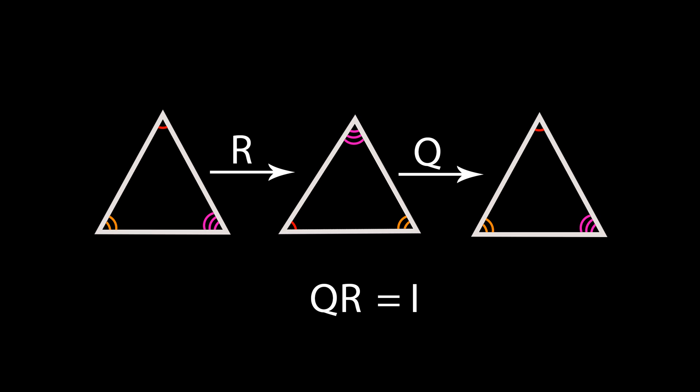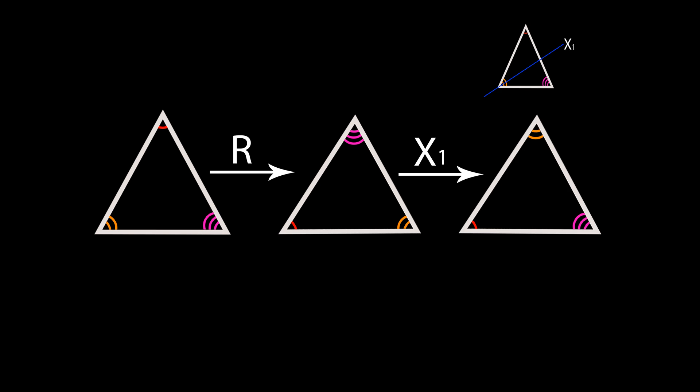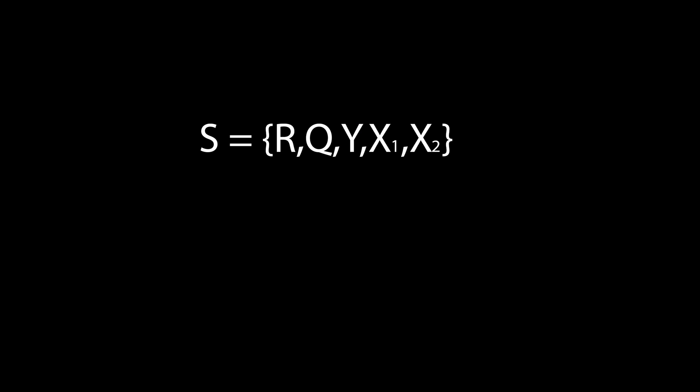We might wonder if there are similar relations for more complicated combinations. Say we first transform by R, and then reflect the shape in the line Y equals X. What do we get then? Well, evidently, this is just the same as reflecting in the line Y equals minus X. Clearly, if we construct the set S to contain all of our transformations, and then say that our binary operation acting on the set is just the composition of transformations, i.e. just doing one transformation after the other, we might be able to find some underlying mathematical structure, like a group.